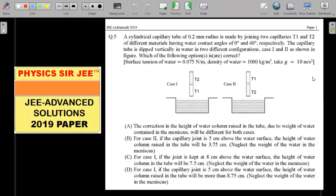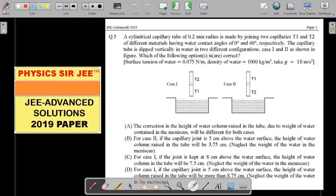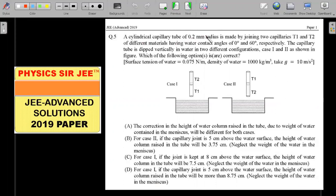If you want to give it a try, and in case you have not yet seen this question before, I would request you earnestly to make sure that you try it for two minutes, pause the video here, and then only go ahead with the concepts and solution that I'm going to provide to you. So let's go ahead with the formal wording of the question. A cylindrical capillary tube of 0.2 millimeter radius is made by joining two capillaries T1 and T2, as you could see labeled, of different materials having different water contact angles of zero degrees and 60 degrees respectively.